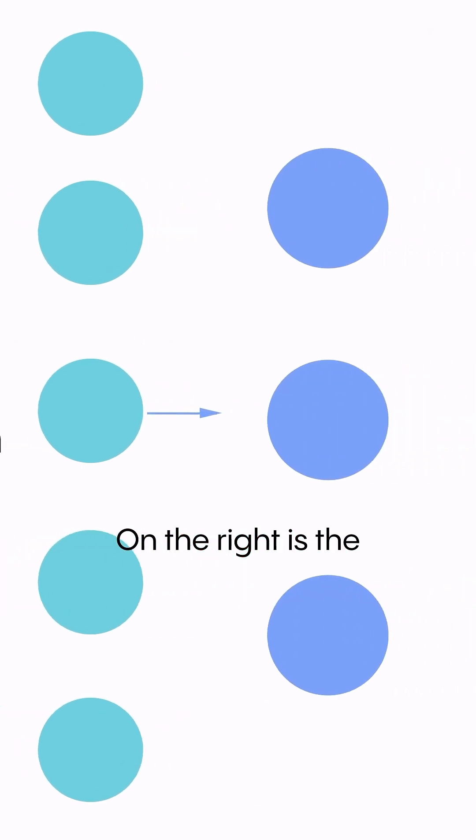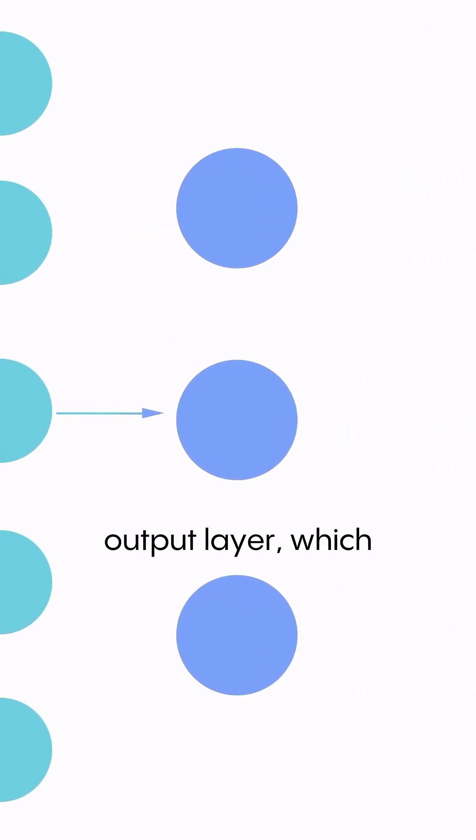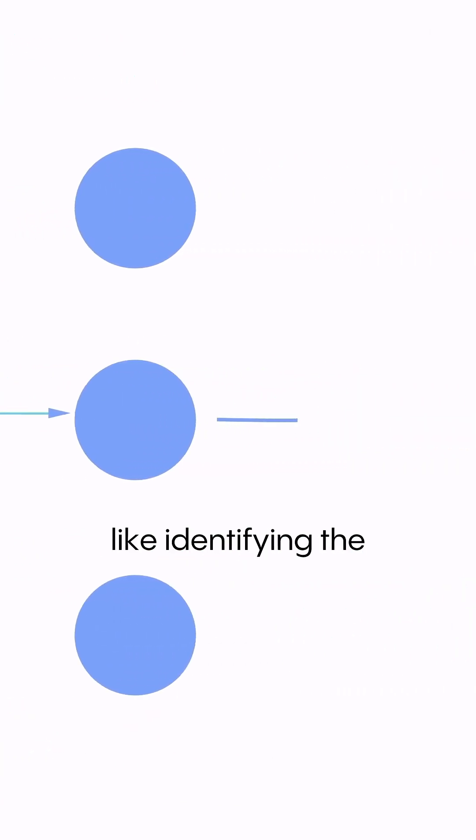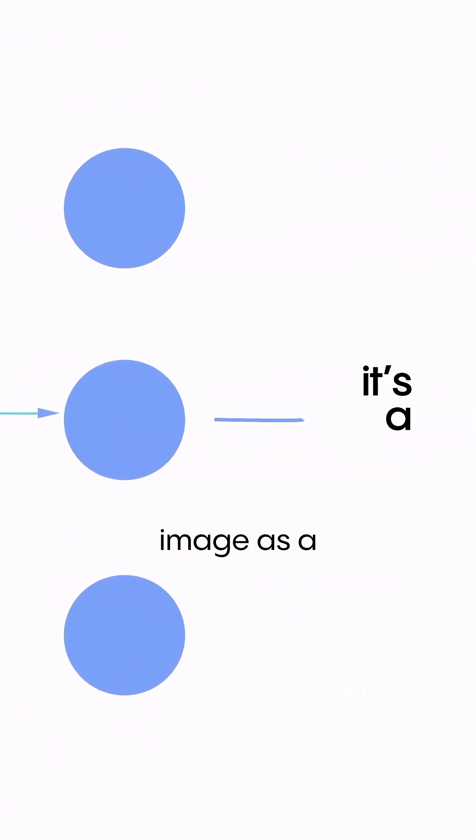On the right is the output layer, which gives the prediction — like identifying the image as a cat or dog.